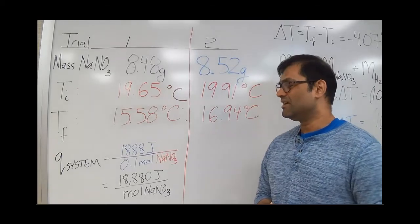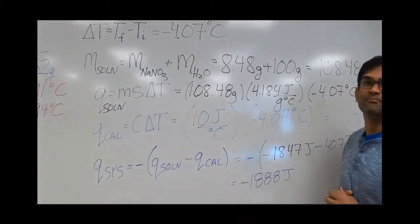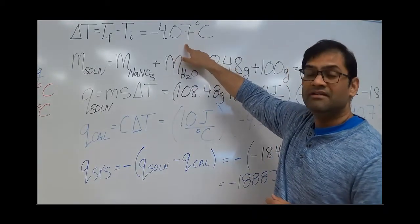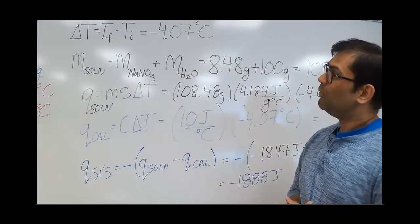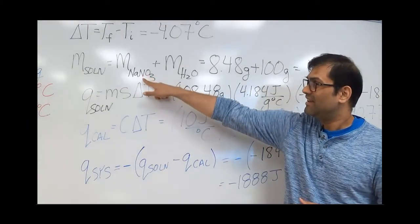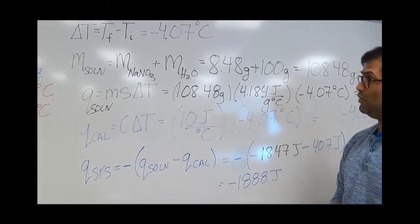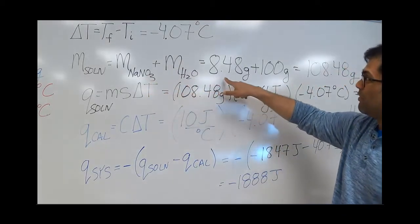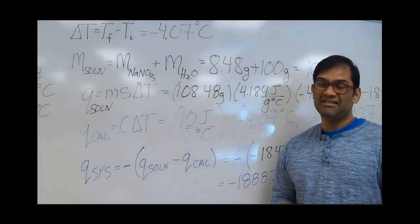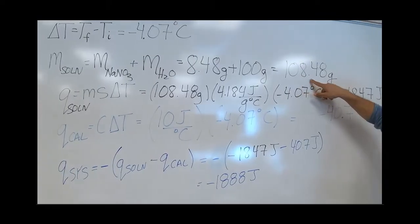We want to figure out the heat that was taken in because the temperature went down — the heat of the system — and then divide that by the number of moles of NaNO3 we put in water. First, let's calculate the change in temperature: delta T equals final minus initial, so 15.58 minus 19.65 equals about minus 4.07 degrees C. Next, we figure out the mass of the solution: solution equals solute plus solvent. The mass of NaNO3 was 8.48 grams, and the mass of water is 100 grams (since density of water is 1 g/mL), giving a total solution mass of 108.48 grams.